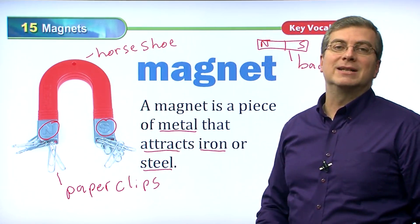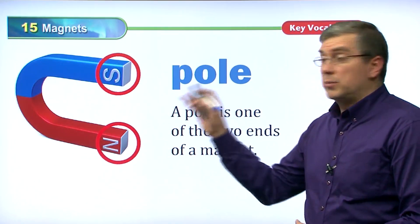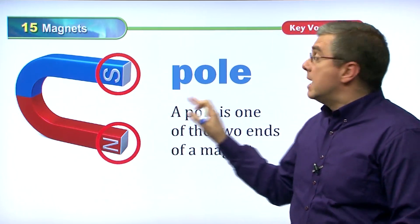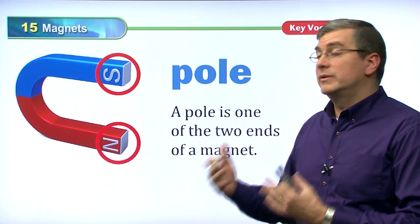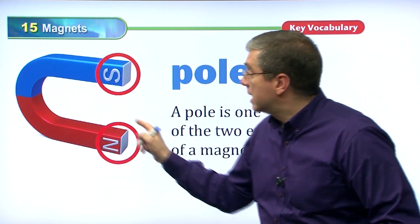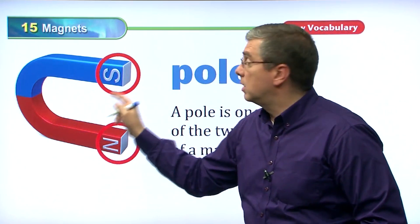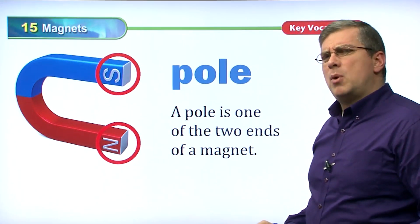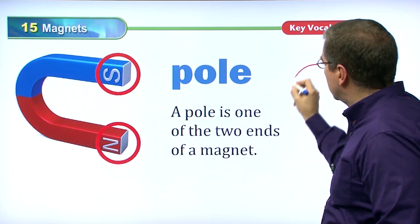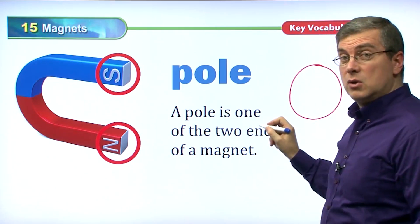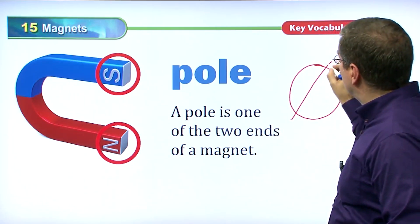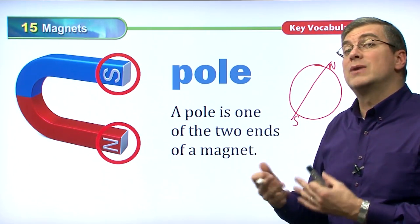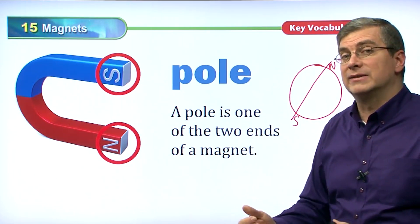In this unit we're talking about magnets. The north pole and south pole are very important when we talk about magnets. The red part is the north pole and the blue part is the south pole. Where else do we hear about poles? The earth also has a north pole and a south pole.